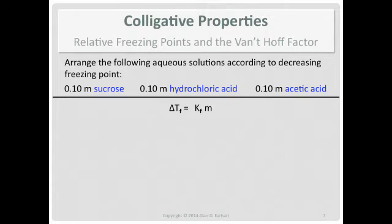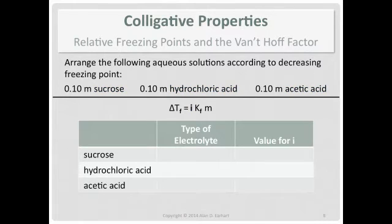Before this section we were dealing with only non-electrolytes, and so you would have expected all three of these solutions to have the same freezing point. But now that we've talked about the van't Hoff factor, you know that if any one of them is an electrolyte, that will affect how many particles there are, because colligative properties come from the number of particles and not the specific identity of the solute. This is how we modified the formula — we stuck in the van't Hoff factor.